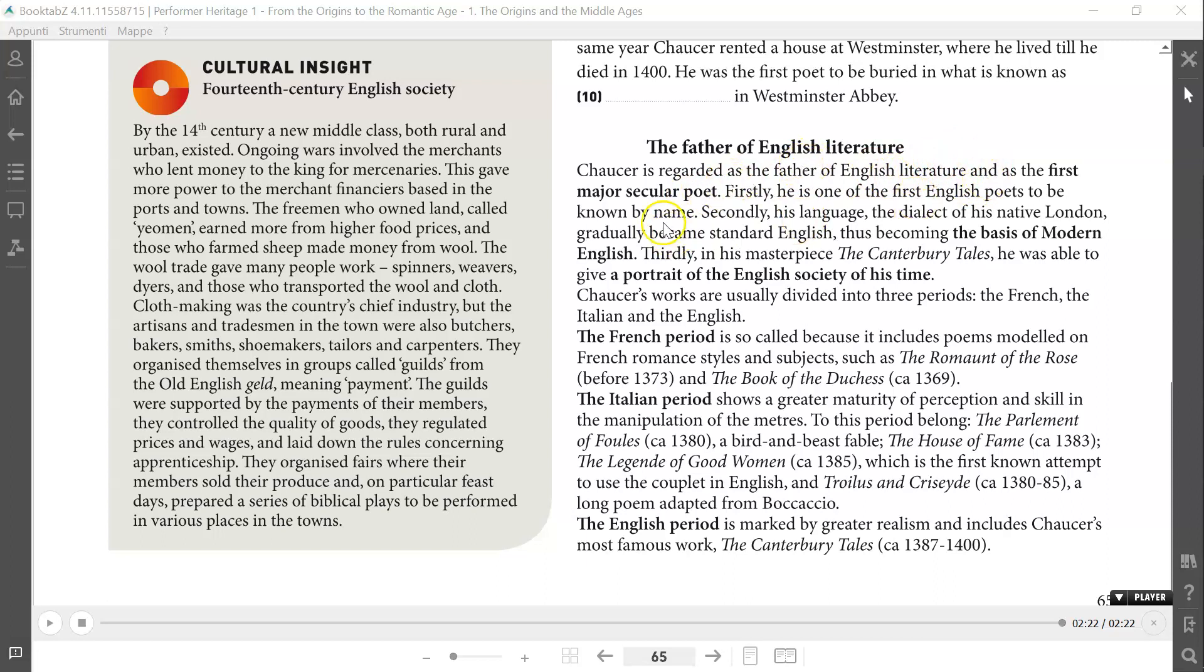And Chaucer is the first known English writer. He's also considered as the first major secular poet because he was the first to use the language spoken in London, the English language spoken in London. So it is particularly important, and we can also underline, is one of the first poets to be known by name.